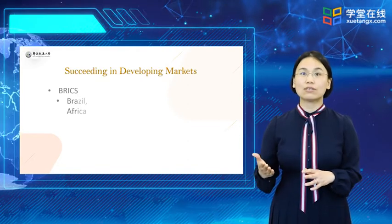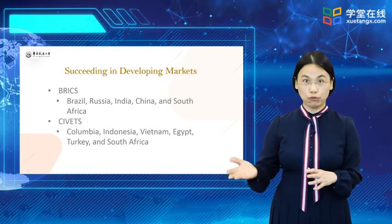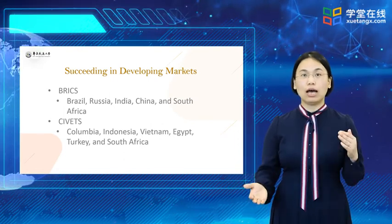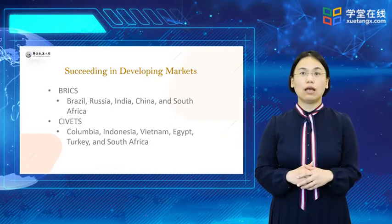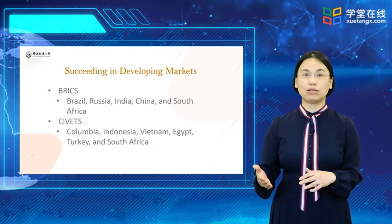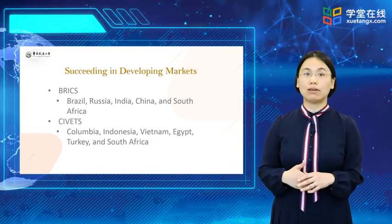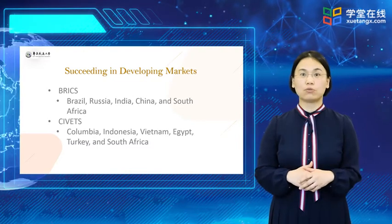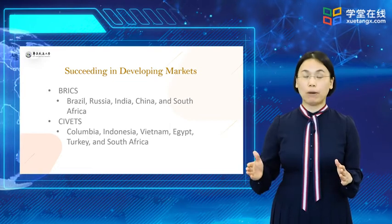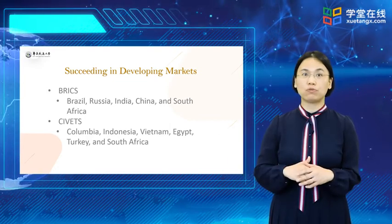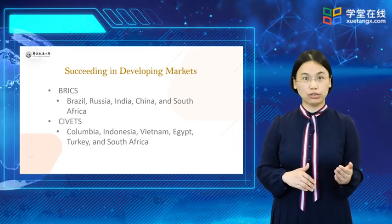The unmet needs of the developing world represent huge potential markets for food, clothing, shelter, consumer electronics, appliances, and many other goods. Many market leaders are relying on developing markets to fuel their growth. The world's largest food company now gets about 40% of its revenue from emerging markets. Developing markets account for about 82% of the world's population, and 90% of future population growth is projected to occur there.